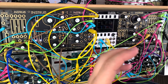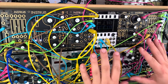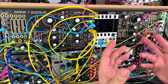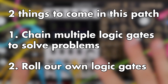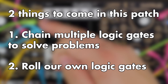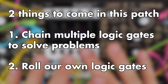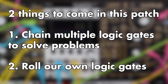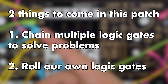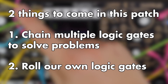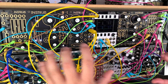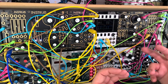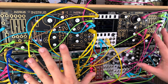Logic is a fantastic problem solver for a modular patch. We're going to do two things: chain multiple logic gates in series, and also roll our own AND logic with a VCA, because I'm going to run out of AND logic channels as I need more than one. This is a little bit longer as there are multiple things and it's a bit more complex, so grab a brew and strap in.